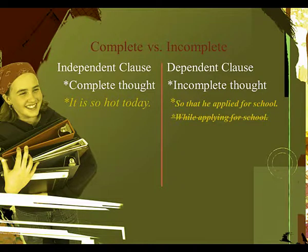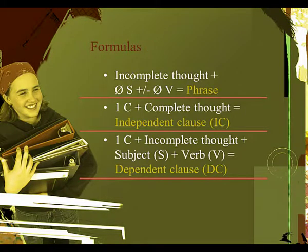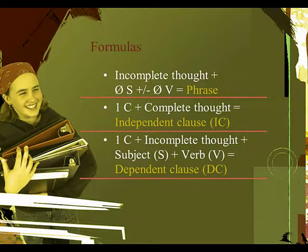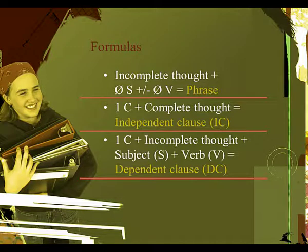Now, how do I write this stuff in a formula? If there is an incomplete thought and it does not have a subject and/or no verb, then it equals a phrase. The next formula: if the clause is just one clause and it contains a complete thought, then it equals an independent clause — IC.